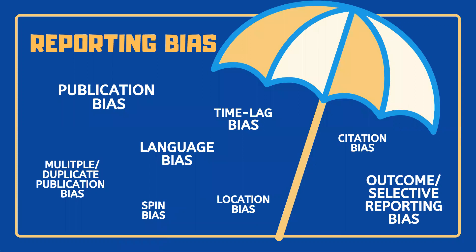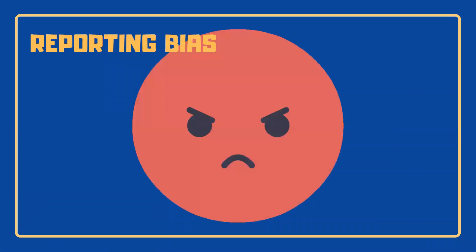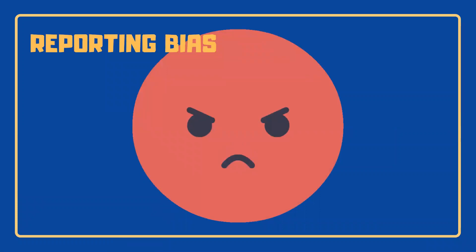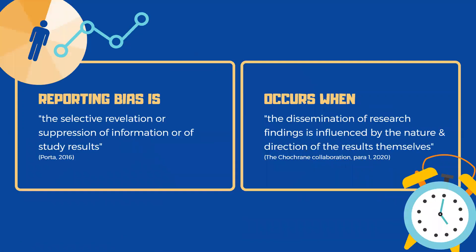Reporting bias is an umbrella term that encompasses a range of different types of biases, and it's also been described as the most significant form of scientific misconduct. Porter of the Dictionary of Epidemiology defines reporting bias as the selective revelation or suppression of information, or of study results, that often occurs when the dissemination of research findings is influenced by the nature and direction of the results themselves.